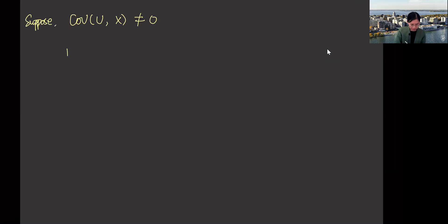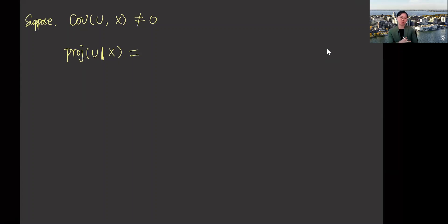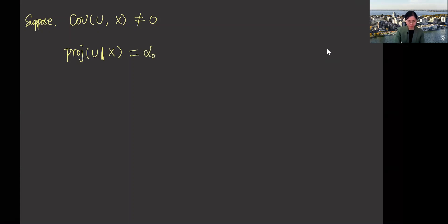Let's try to see what the projection of u on x should be. The projection of u on x is a linear function of x by definition, because projection is the best linear function of x that approximates the conditional mean of u given x. So the projection of u given x can be written as alpha_0 plus alpha_1 * x for some numbers alpha_0 and alpha_1.